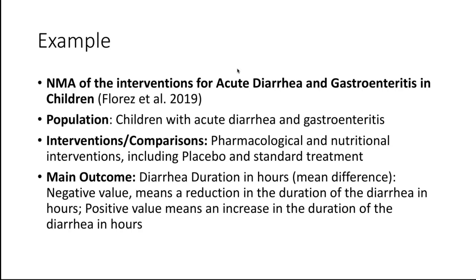The example I looked at is a network meta-analysis of interventions for acute diarrhea and gastroenteritis in children. The population is children with diarrhea and gastroenteritis; the interventions and comparisons are pharmacological and nutritional interventions including placebo, based on a systematic review by Ivan Flores and colleagues. I will focus on one outcome: the duration of diarrhea, expressed as a mean difference, where a negative value means a reduction and a positive value means an increase.